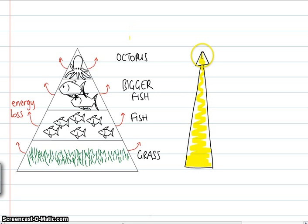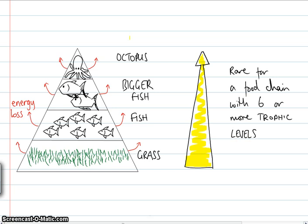That is why, quite often, or it's very rare to have a food chain like this. It's quite rare to have a food chain with six or more levels. And those levels we actually call trophic levels. So it's rare for a food chain with six or more trophic levels.